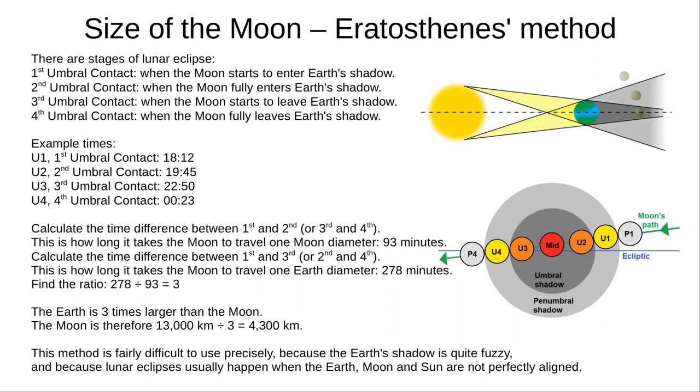And fourth umbral contact is when the moon fully leaves the umbra. And these are labelled on the lower picture here, U1, U2, U3 and U4. There are some example times shown on the screen. These times are taken from Edexcel's specimen paper 1.